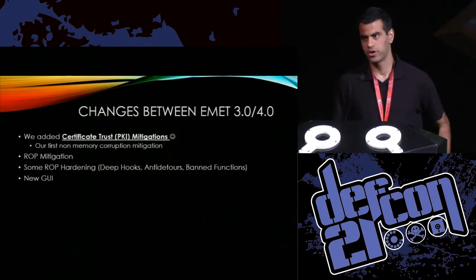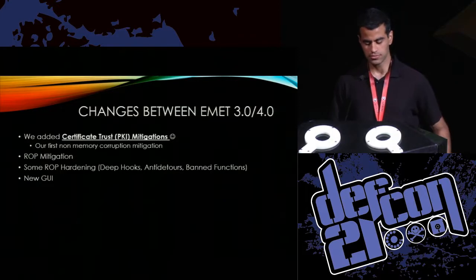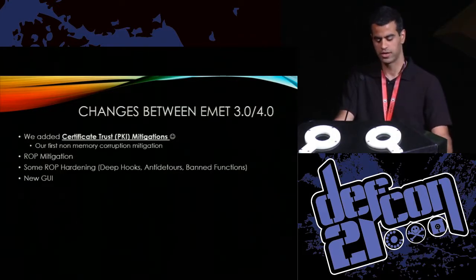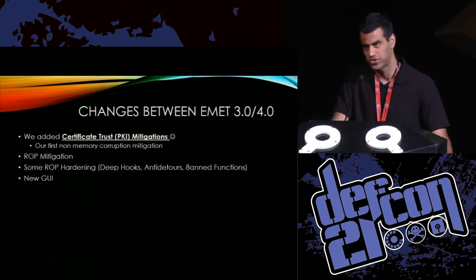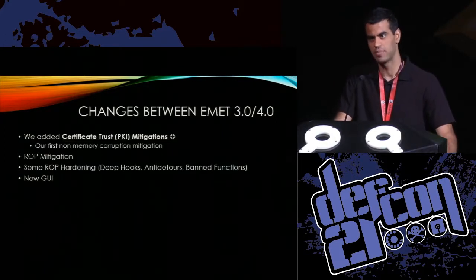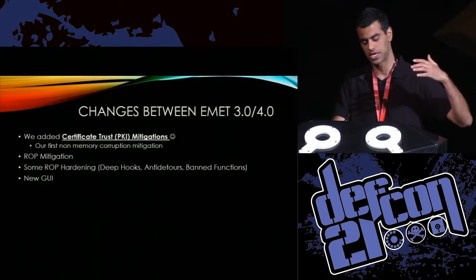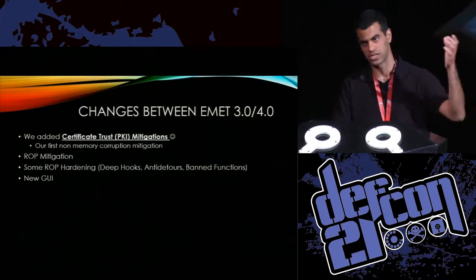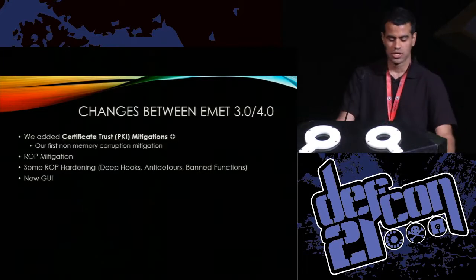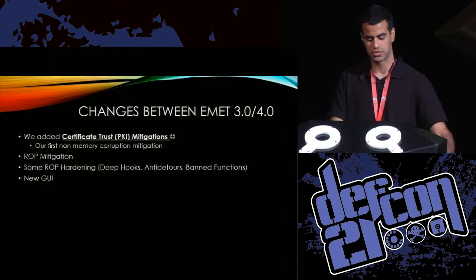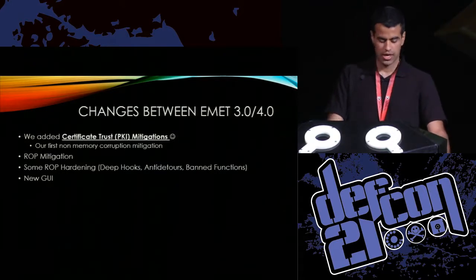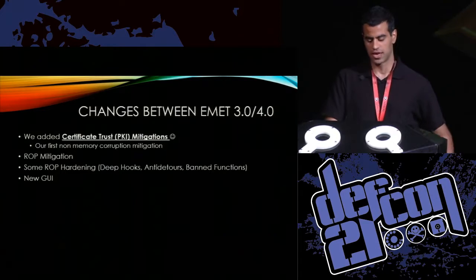Some changes between EMET 3.0 and 4.0: first of all, we added the certificate trust PKI mitigation. A lot of talks this year at DEF CON have been about man-in-the-middle and abusing PKI. I'm not saying PKI itself is bad, but sometimes it can be weakly or badly implemented — like if you use short keys for your roots. We also added a mitigation for ROP exploits, some hardening for those ROP mitigations, and a new user interface with skins and cool stuff like that.